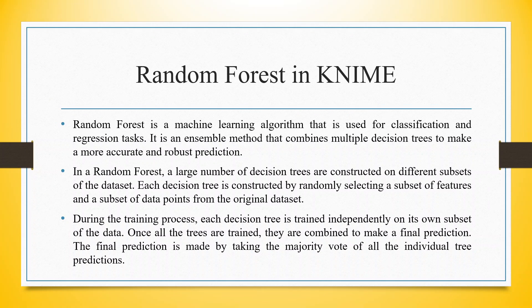In a Random Forest, a large number of decision trees are constructed on different subsets of the dataset. Each decision tree is constructed by randomly selecting a subset of features and a subset of data points from the original dataset. During the training process, each decision tree is trained independently on its own subset of the data.